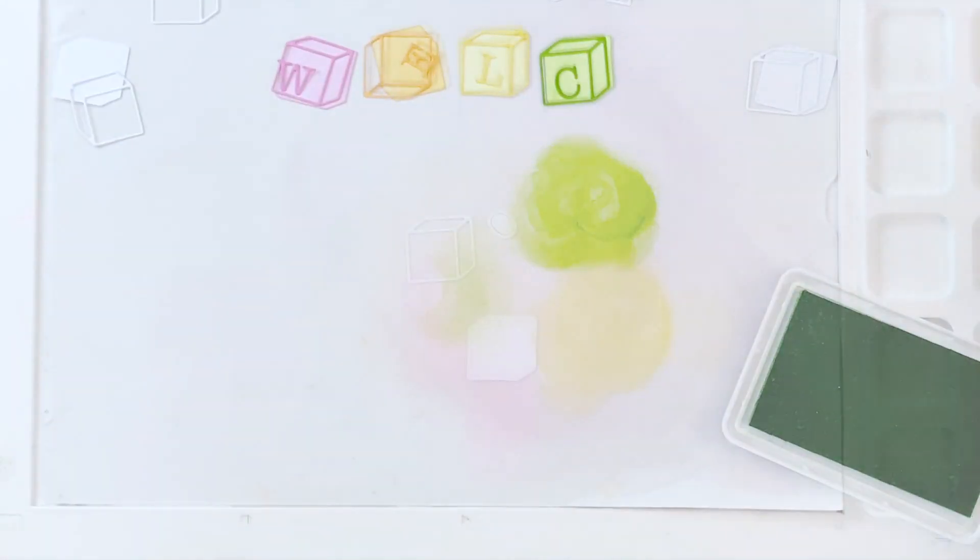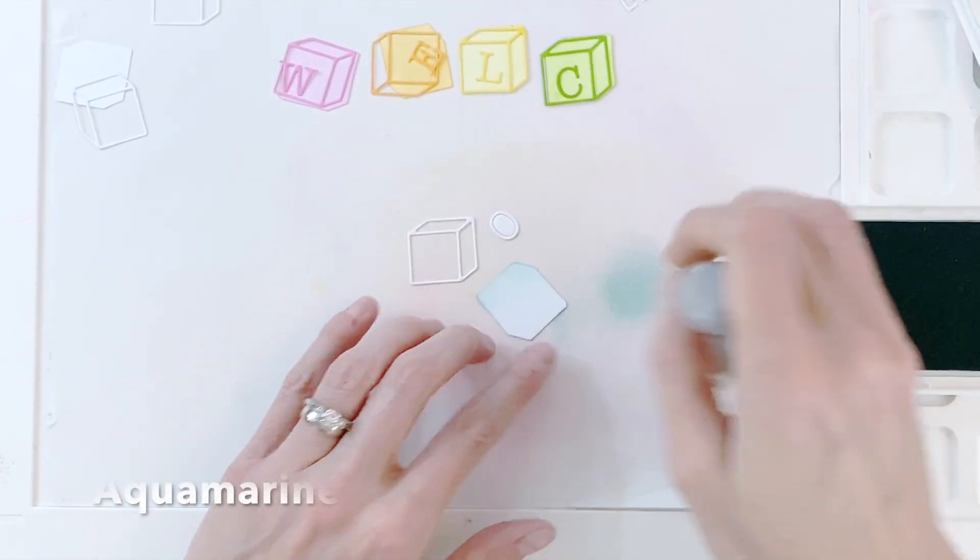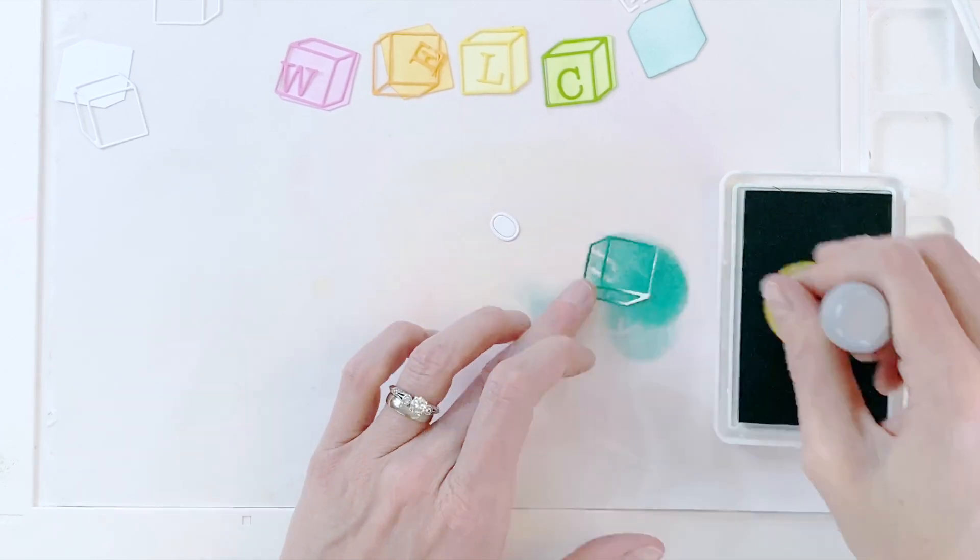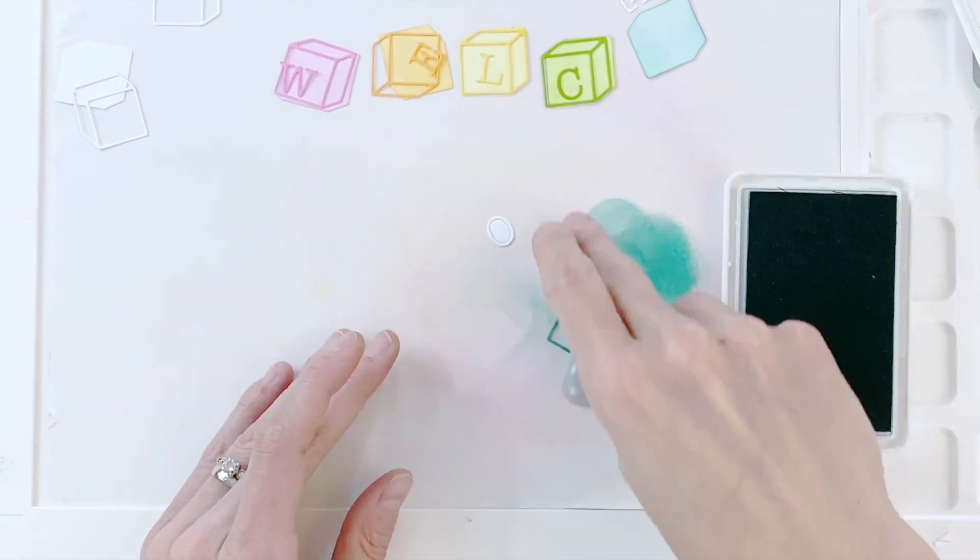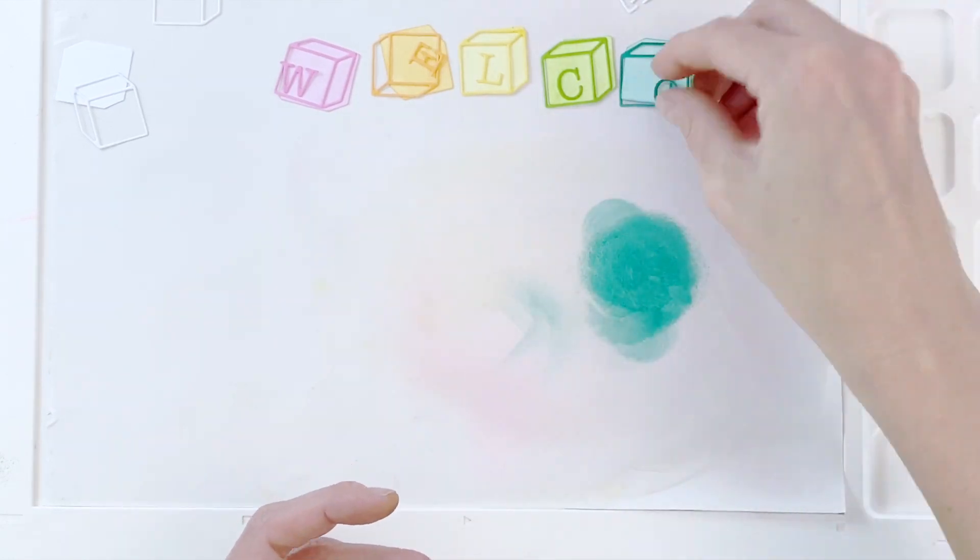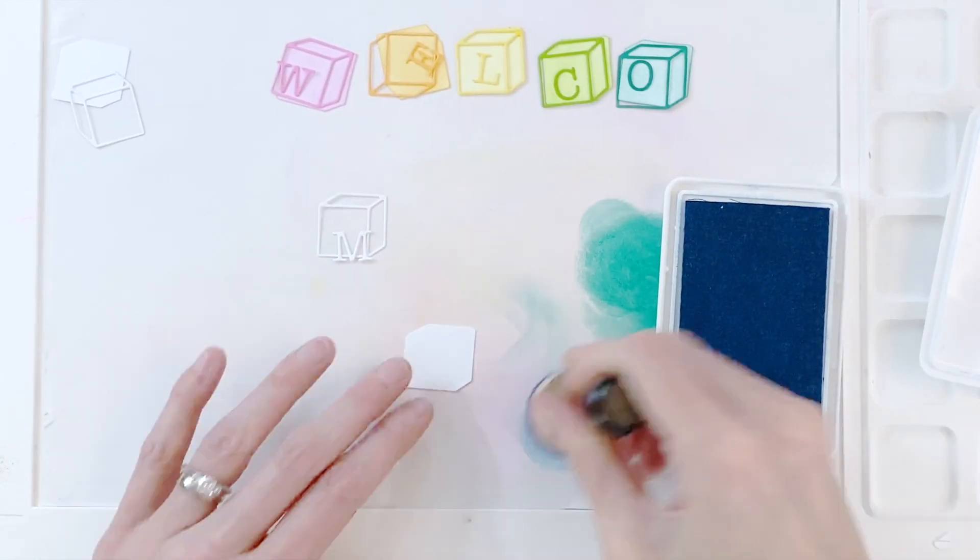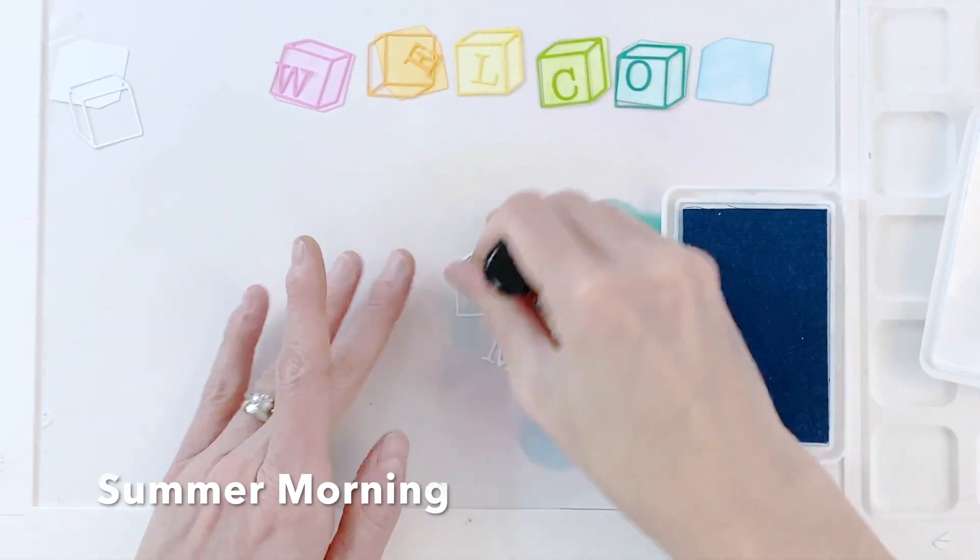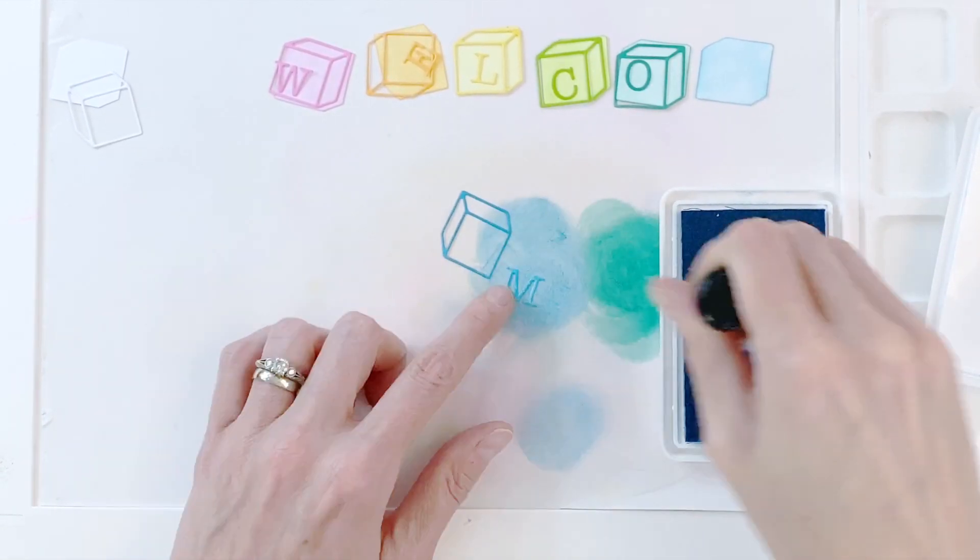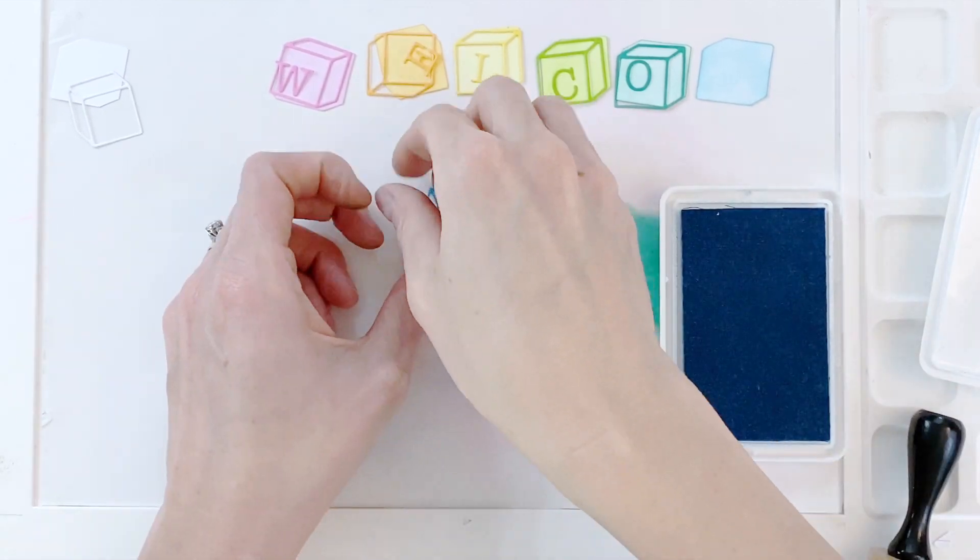And you could use whatever color palette you want. You could definitely do more pinks if you want to do a really gender specific welcome baby card. I chose to do a rainbow because I felt like that wasn't gender specific. So this card could really go to either a little girl or a little boy baby. So I'm just finishing up here with my last two colors here. I'm going to do two blues at the end. Kind of a lighter blue and then move on to a darker blue.